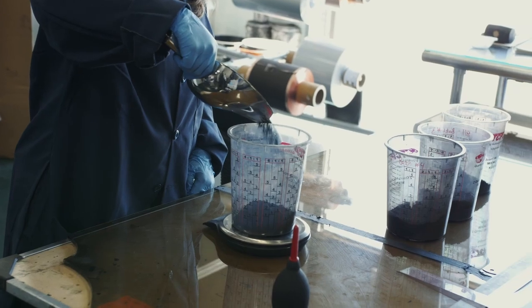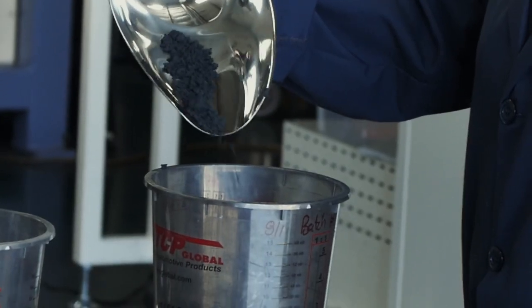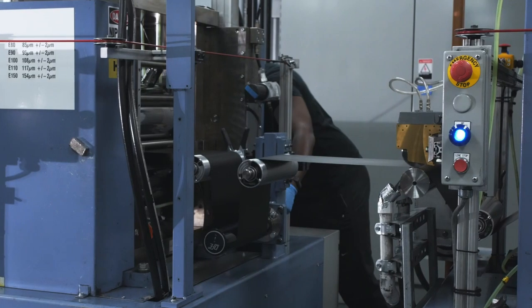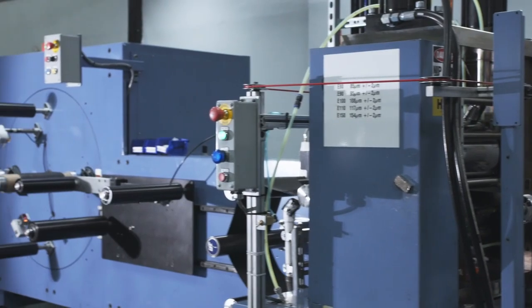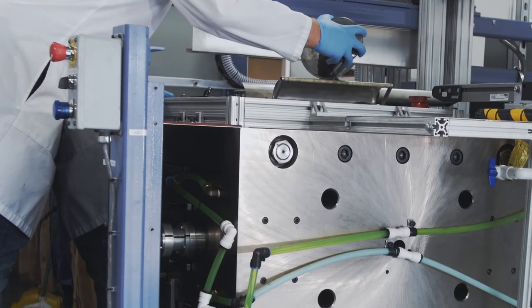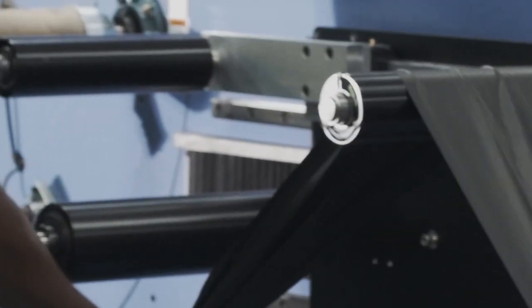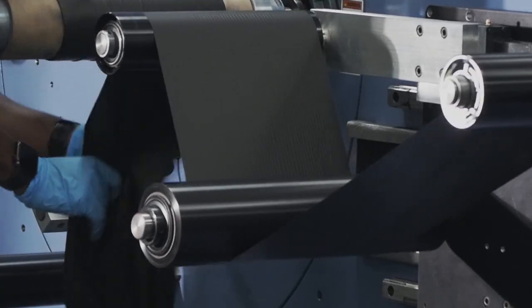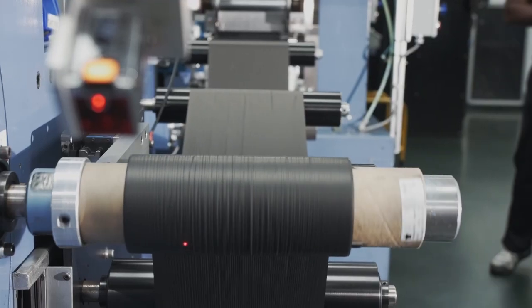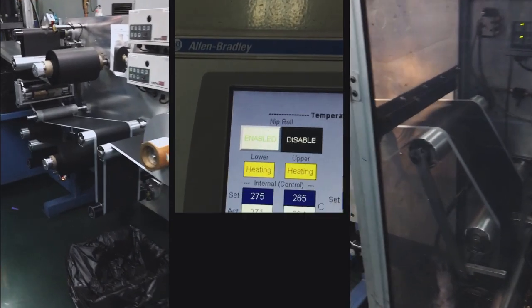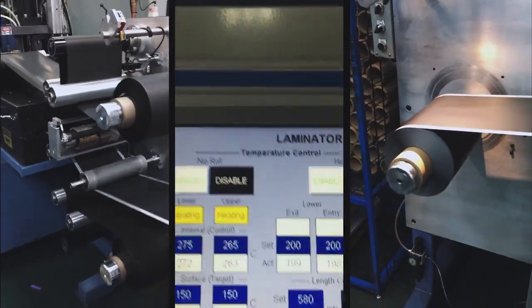Our process begins with the know-how mixing of battery materials and simultaneous activation of the binder. This mixture is then fed into special equipment designed by our engineers, where the powders are pressed into a standalone electrode film. The last step is the lamination of a standalone film on a current collector.